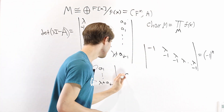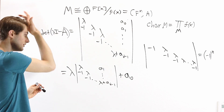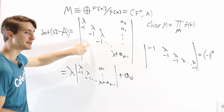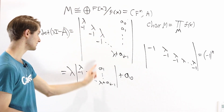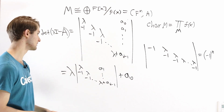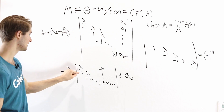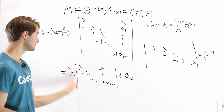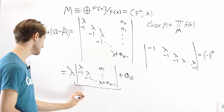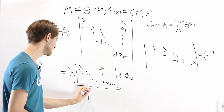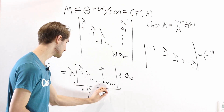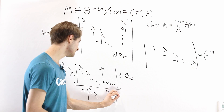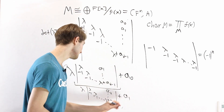Looking at the inner matrix, it has exactly the same form as the original, except we start at A_1 instead of A_0 — same pattern of λ and -1 entries, with coefficients shifted. So we can apply the exact same process recursively: this matrix gives λ times the same determinant structure starting at A_2, plus A_1.